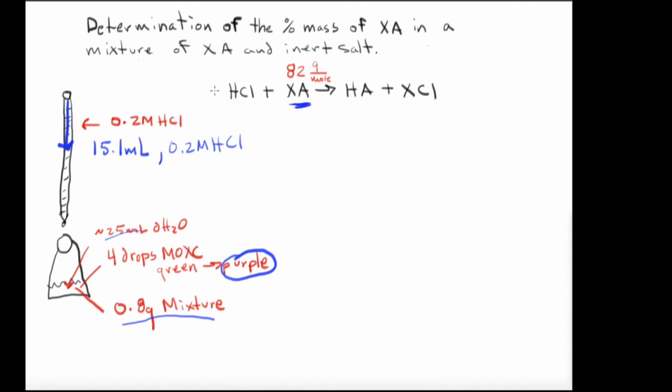So to calculate the moles of XA reacted, note that the mole ratio here is 1 to 1. So the first thing we're going to do is convert the milliliters dispensed to liters dispensed, which is going to be 0.0151 liters.